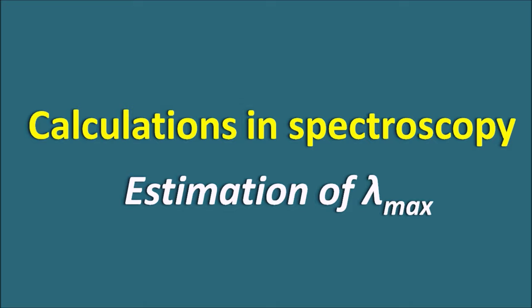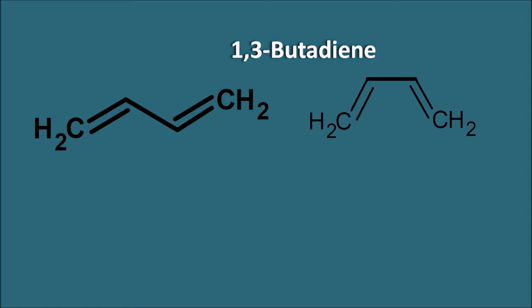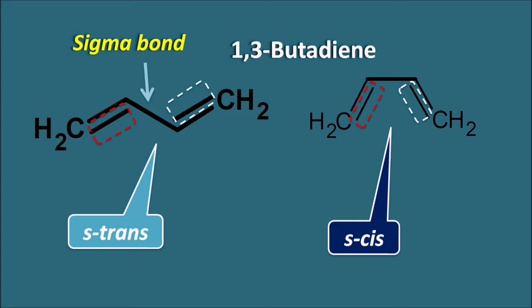Let us take a diene like this — this is a simple diene, that is 1,3-butadiene. This 1,3-butadiene can also exist in another conformation. The difference between these two conformations is that they differ based on the orientation of the double bonds around the single bond. In the first structure, one double bond is below and the other is above, so the double bonds are on opposite sides of the sigma bond — this is the S-trans conformation. In the second conformation, the two double bonds are on the same side of the single bond, so this is the S-cis conformation.